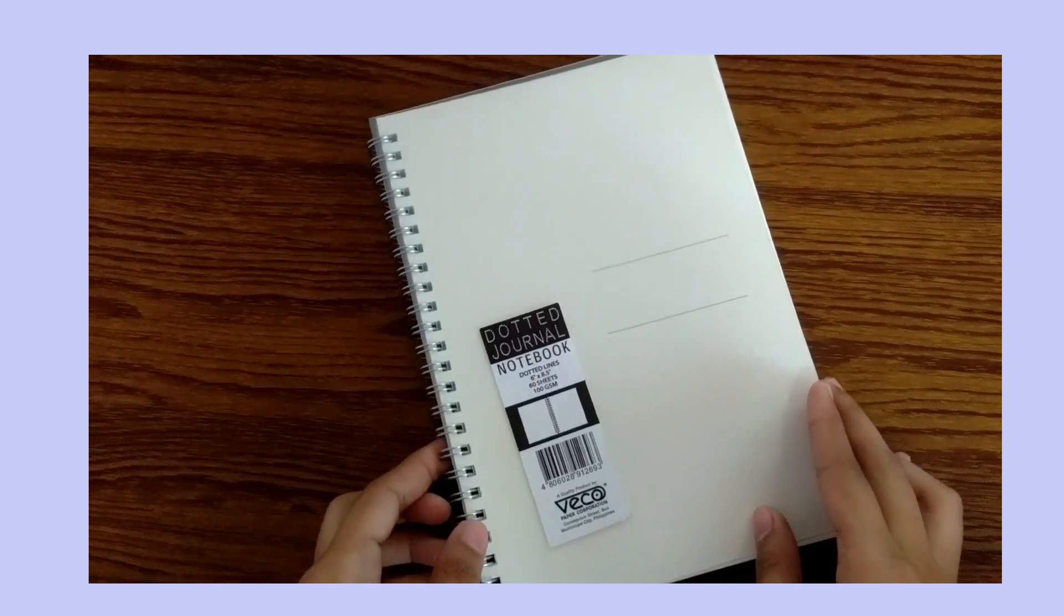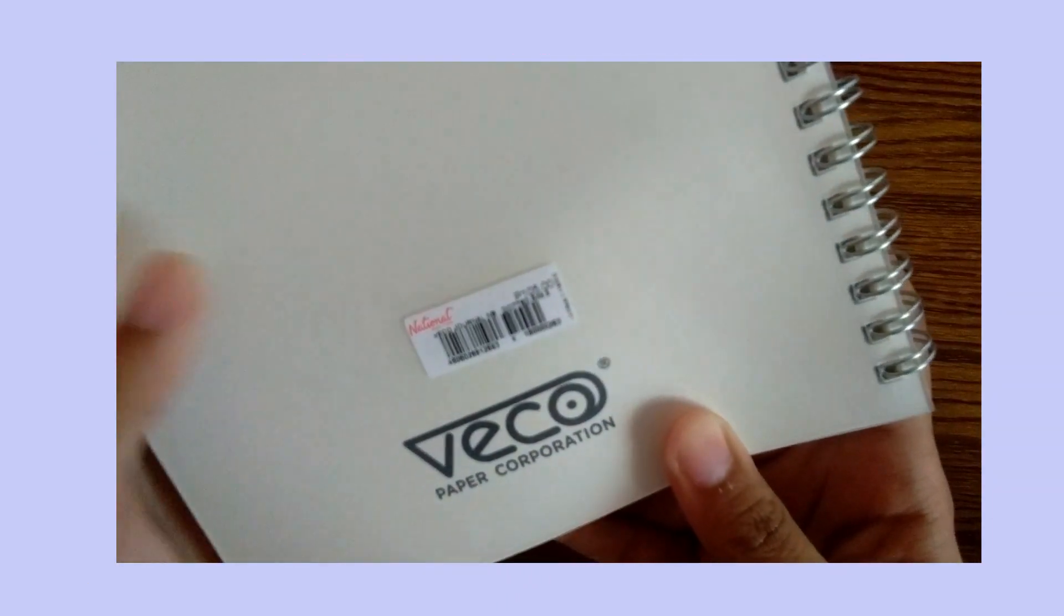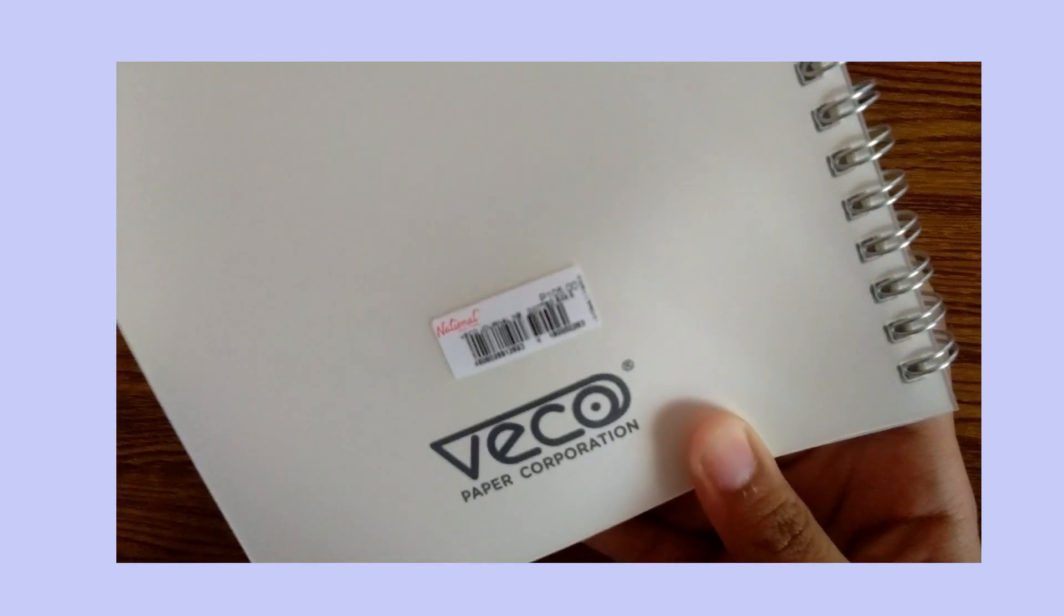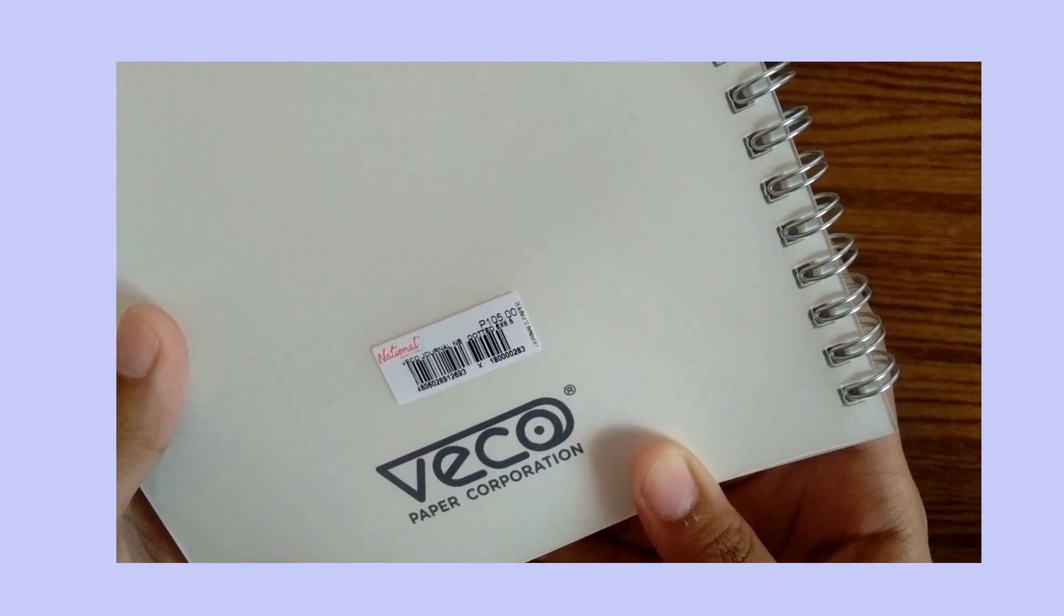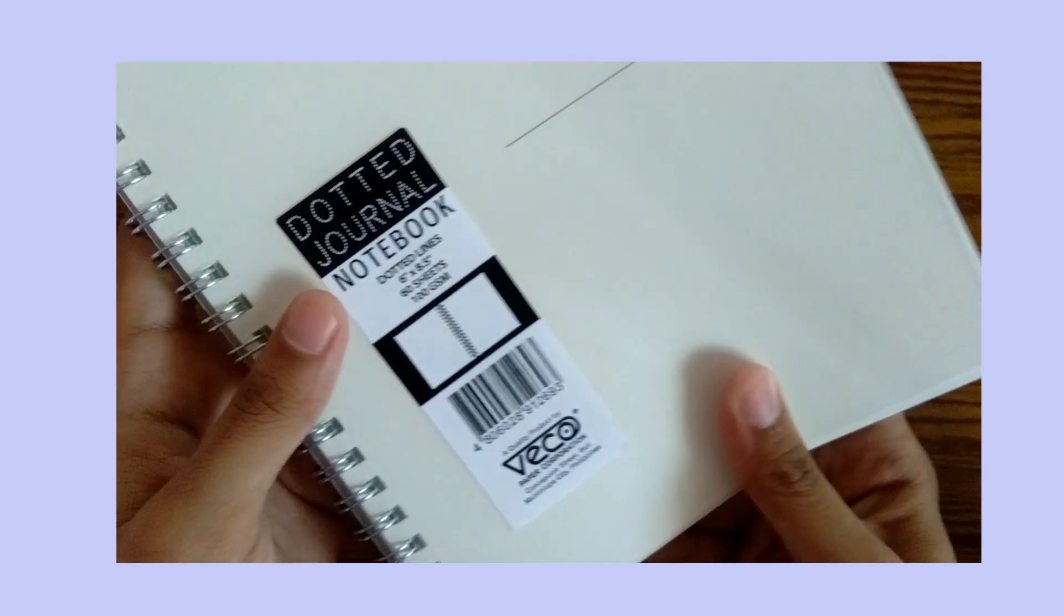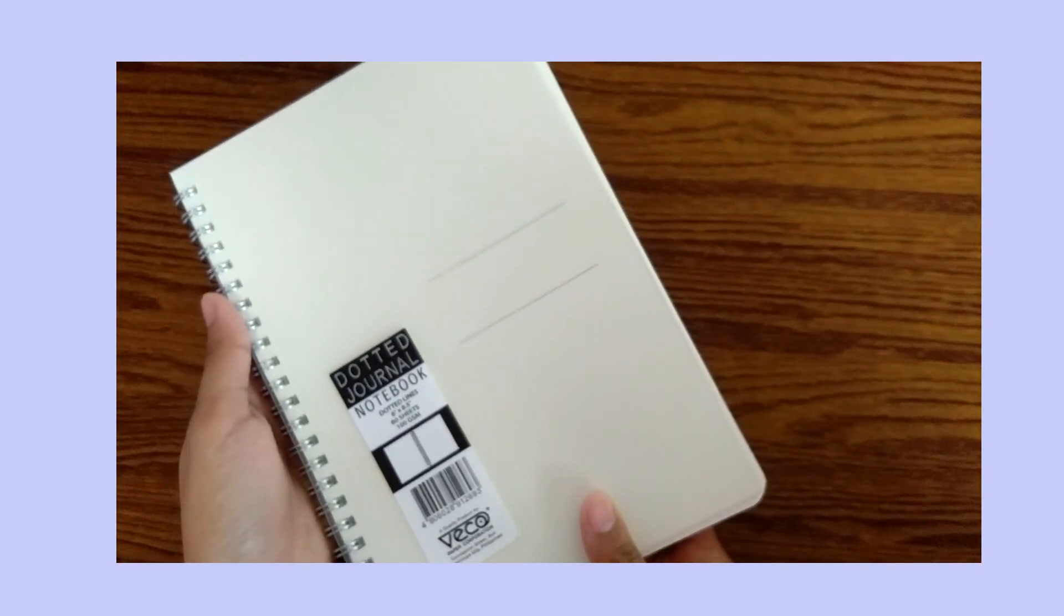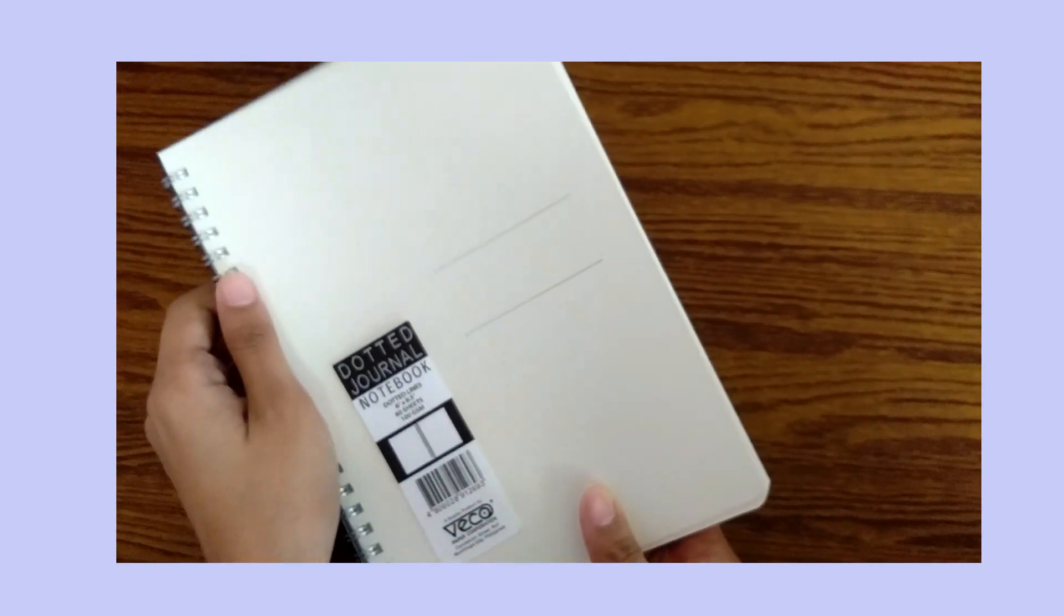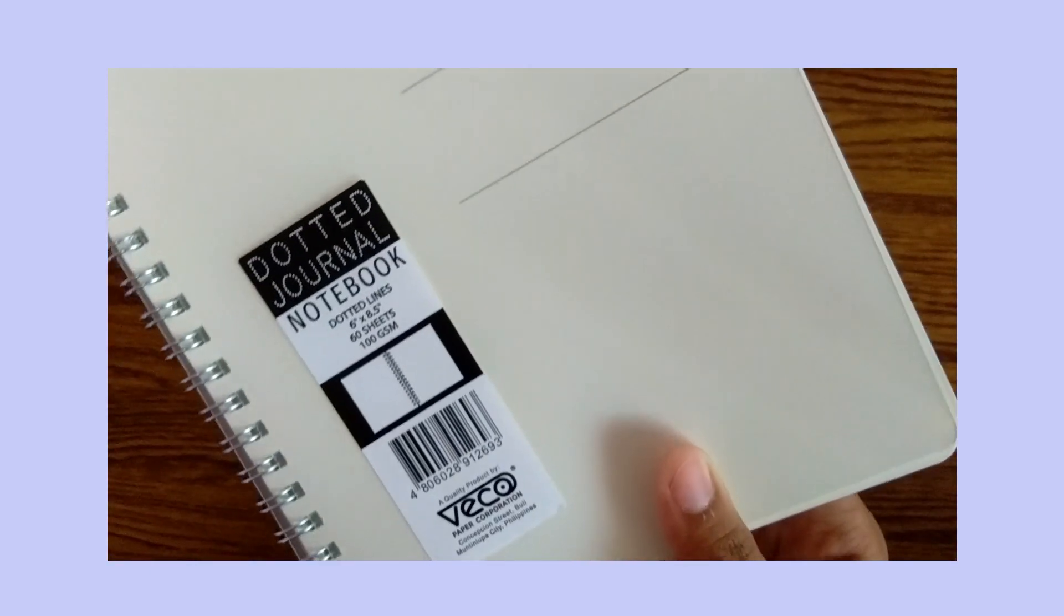So this is the notebook that I bought just for my watch list. It's a VECO dotted journal that only costs 105 pesos. I actually like this so much and I think it's also good quality for a daily journal or bullet journal. And I will definitely recommend this one for those who want to start their own journal.